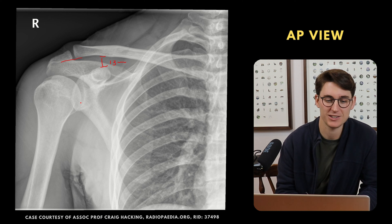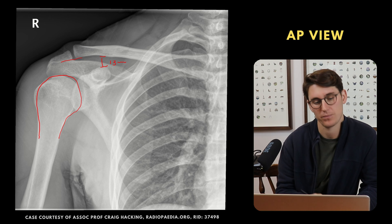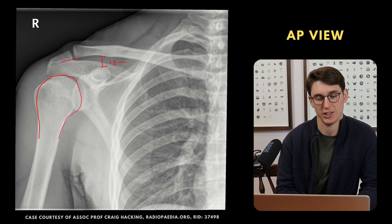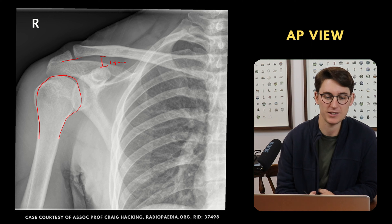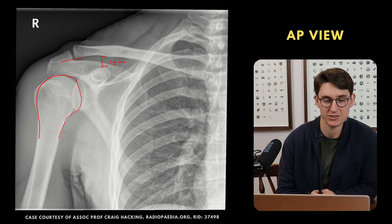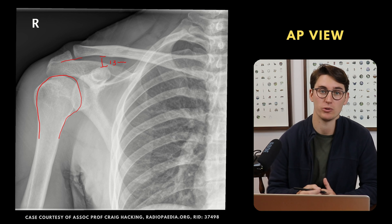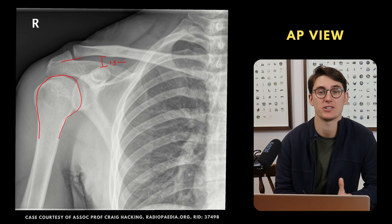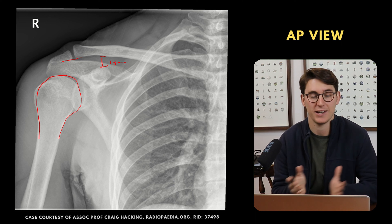The fourth question is: does the humeral head have an almost walking stick orientation — is there this characteristic angulation? When we take an AP x-ray, the patient should be in slight external rotation, which brings the humeral head around and gives it that characteristic shape. If it's not in that shape, we need to suspect something such as a posterior dislocation. The last question is: is there any evidence of fractures? In this case, there are none.